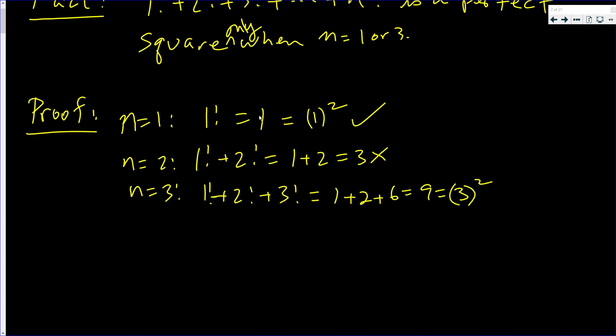Now, we just need to do one more and then argue why if it's bigger than four, it won't work. One factorial plus two factorial plus three factorial plus four factorial. Well, we just realized what I underlined is nine and four factorial is 24 and that ends in a three, which no square ends in a three.